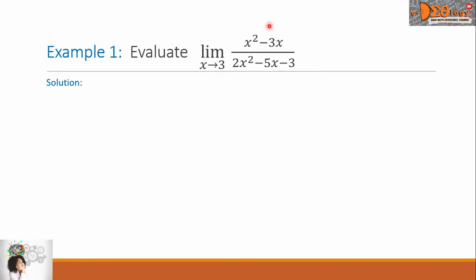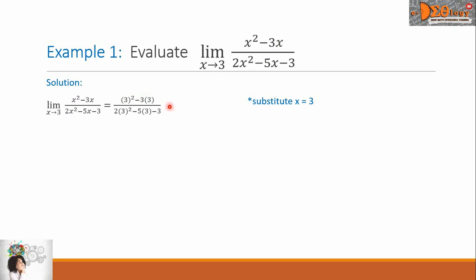For our solution, let us copy this limit problem. We know that to evaluate this limit, we are going to substitute the value 3 to all the x of this function. If we do that, we will have 3 squared minus 3 times 3, all over 2 times 3 squared minus 5 times 3 minus 3. Simplifying further: 9 minus 9 all over 18 minus 15 minus 3, giving us 0 over 0.